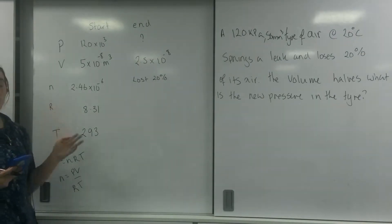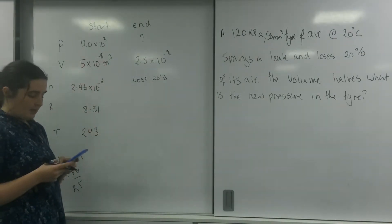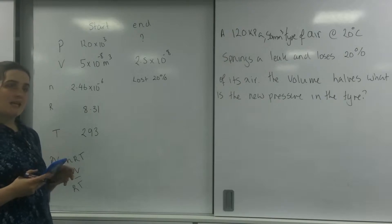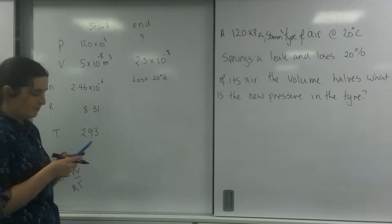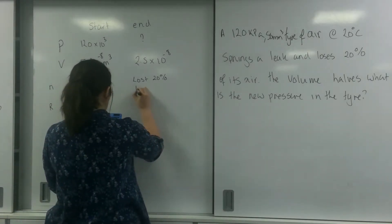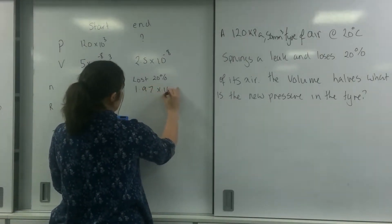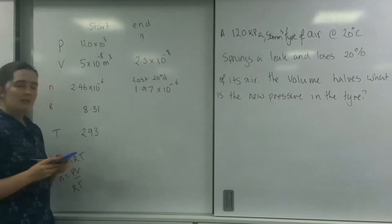I have lost 20% of that, so I only have 80% remaining. So I'm going to times this by 0.8, which is going to be 1.97 times 10 to the minus 6.